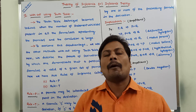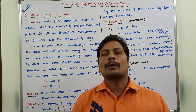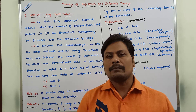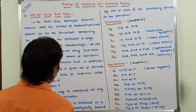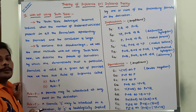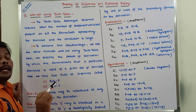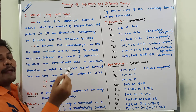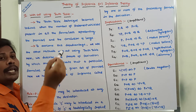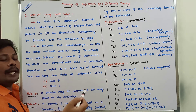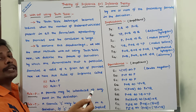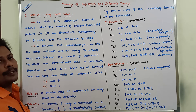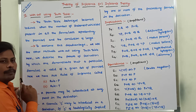Another rule is also called Rule CP. Rule CP will be explained in later videos. Now, what is Rule P? A premise may be introduced at any point in the derivation. Suppose we are deriving the conclusion from the given set of premises — in that derivation, we can introduce any premise at any point. That is called Rule P.